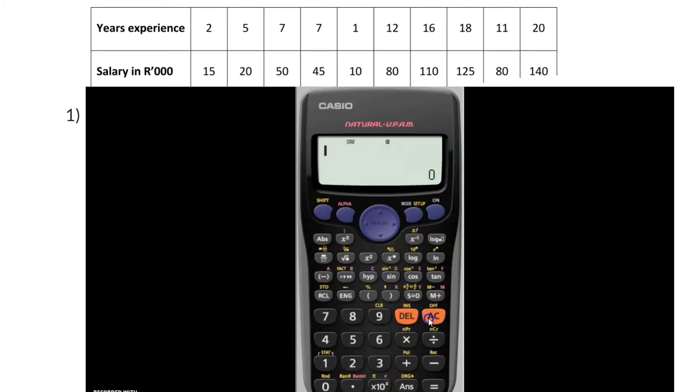Once the data is all read in, you press AC and go to shift and option 1 for statistics. Here, we choose option 5, our regression option, and the correlation coefficient has a symbol R, so we choose number 3. Here, you will see that the correlation coefficient is then 0.99.